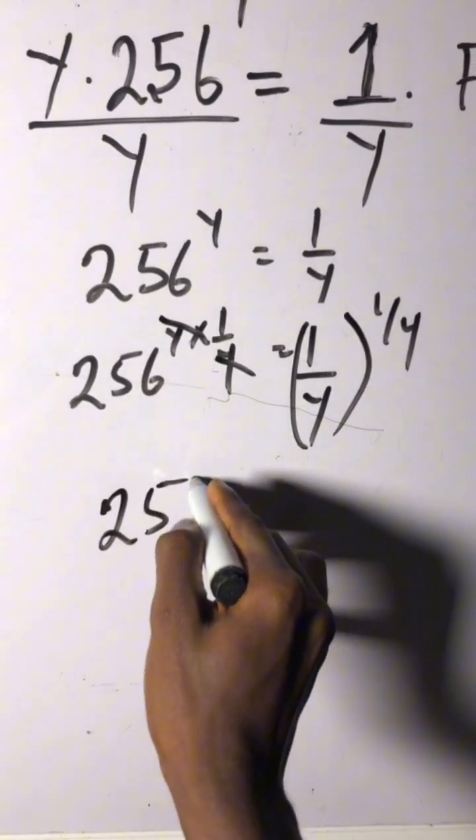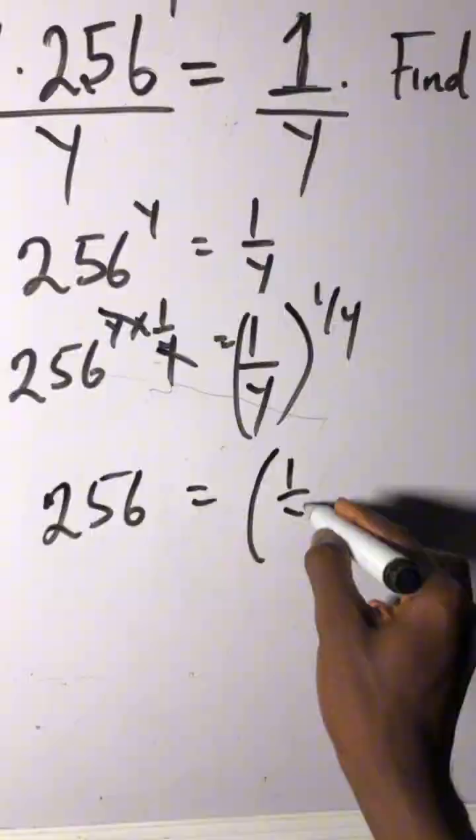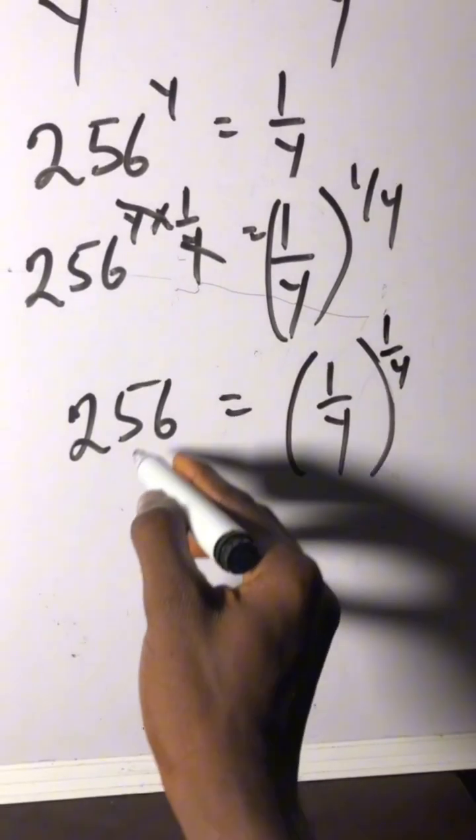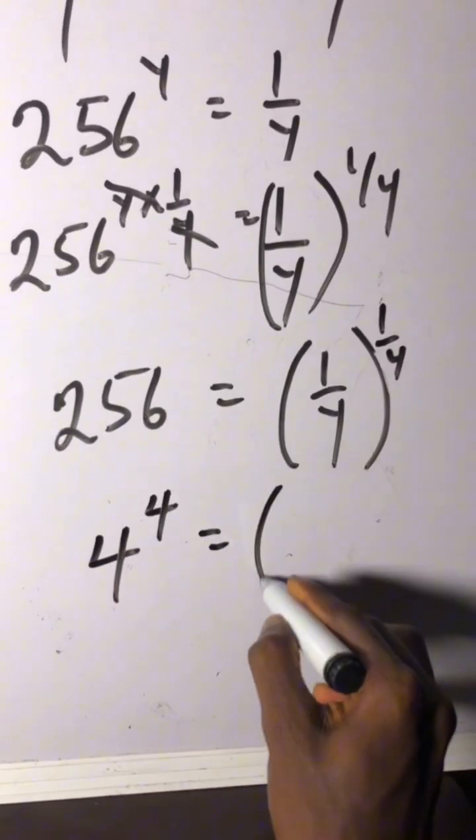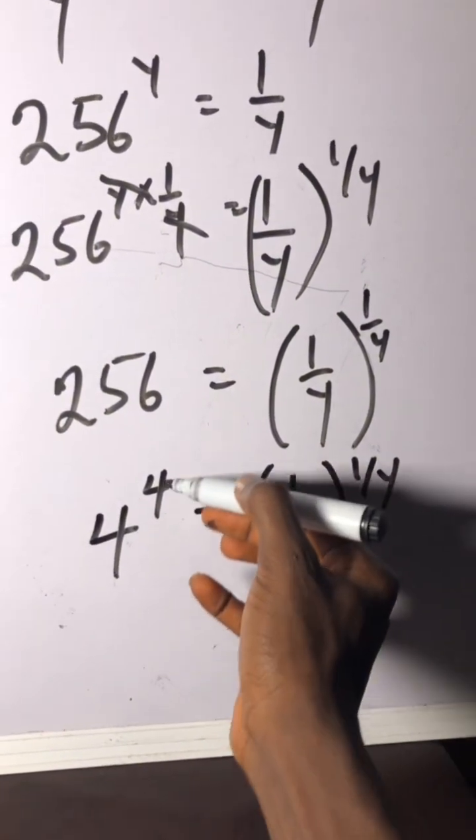Okay, and now we need to change this to its index form. This is 4 to the power of 4. Okay, now since the base is the same as its power, likewise.